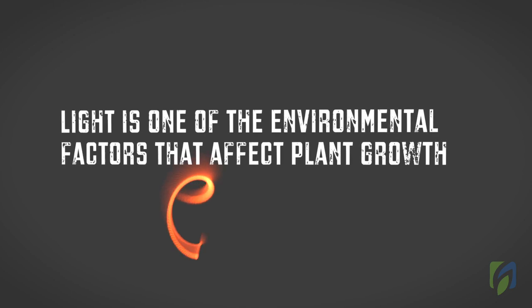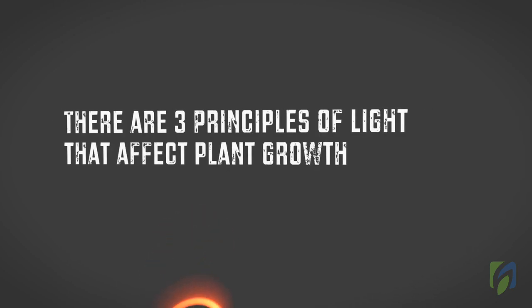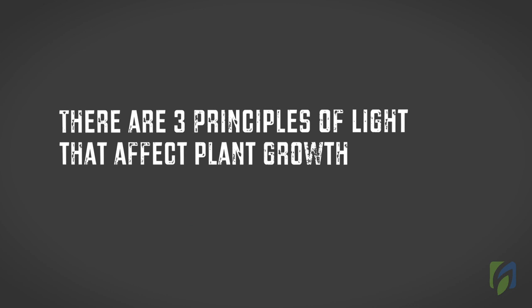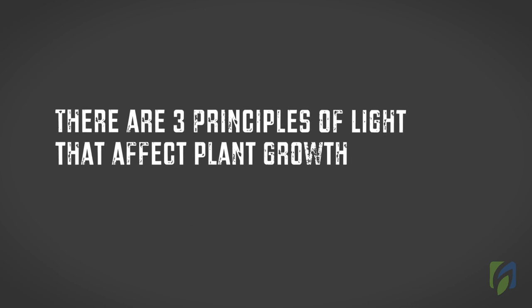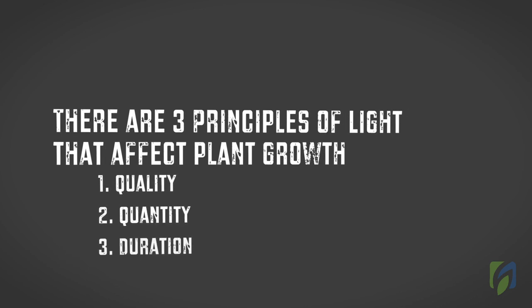Light is one of the environmental factors that affect plant growth. There are three principal characteristics of light that affect plant growth: quality, quantity, and duration. This video will focus on light quality.